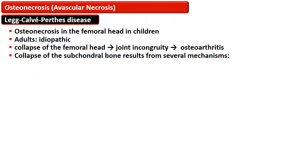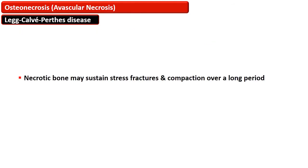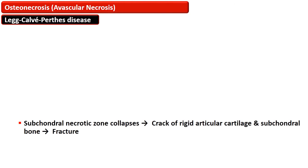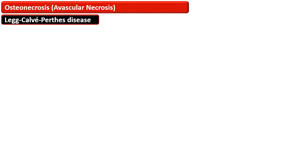Legg-Calvé-Perthes disease is osteonecrosis of the femoral head in children; in adults the same area is affected with idiopathic etiology. In both conditions, collapse of the femoral head creates joint incongruity, disturbing unit load and causing severe osteoarthritis. This collapse results from several mechanisms: the necrotic bone may sustain a stress fracture and compaction over time; new vascularization develops around the necrotic bone; and the rigid articular cartilage and subchondral bone may crack as the subchondral necrotic zone collapses.